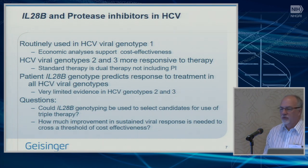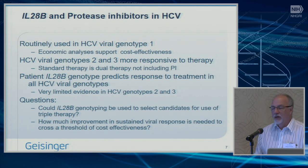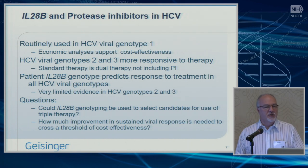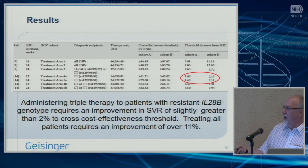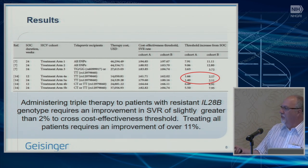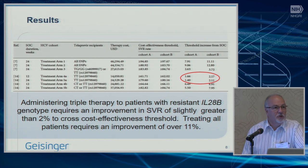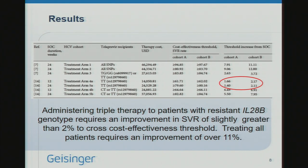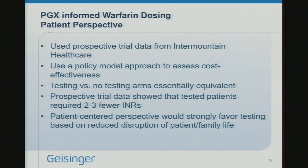The question we asked was: if you did IL-28B genotyping to select poor responders for triple therapy from the start — initially using a protease inhibitor as for genotype 1 — how much improvement in sustained viral response is needed to cross a cost-effectiveness threshold? We found that if you administered triple therapy to patients with the resistant IL-28B genotype, you only needed an improvement in sustained viral response of about 2% to cross the threshold, which was stunning. Whereas treating all patients with triple therapy required an 11% improvement. This was groundbreaking work, immediately supplanted by new medications — so completely irrelevant now, but still fun to do.